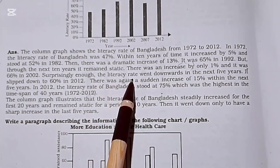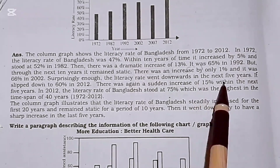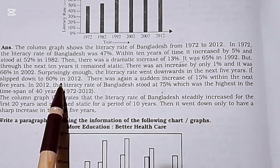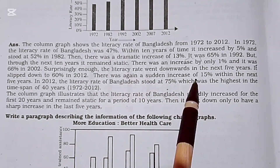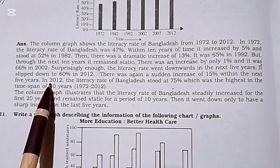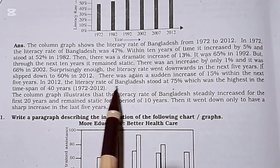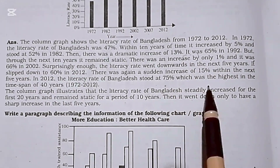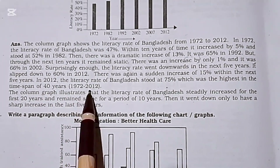Surprisingly enough, the literacy rate went downwards. In the next 5 years it slipped down to 60% in 2007. There was then again a sudden increase of 50% within the next 5 years. In 2012, the literacy rate of Bangladesh stood at 75%, which was the highest in the 40-year time span from 1972 to 2012.